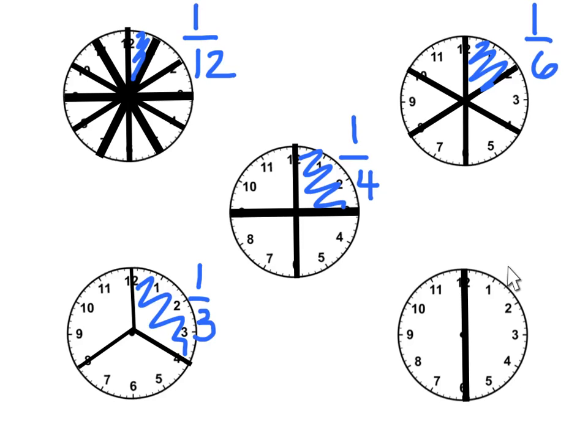Lastly, if we take a look at the clock in the bottom right-hand corner, that clock has been broken into 2 equal sections. So I'm shading in 1 half of the clock. We can discuss twelfths, sixths, fourths, thirds, and halves when discussing clocks.